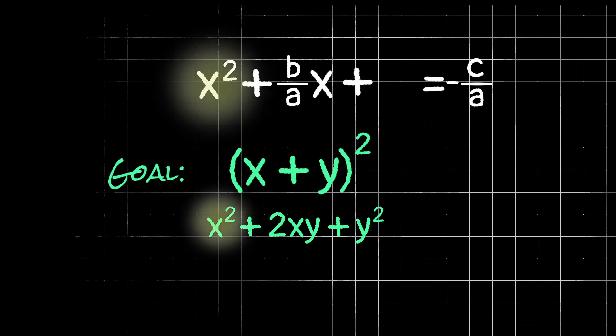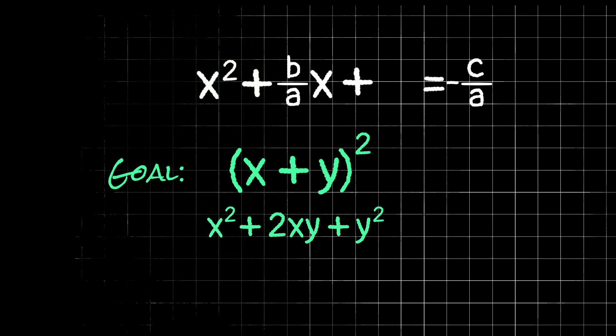Looking at what we have on the left side of the equation, we already have an x squared, so that's good. Both of these second terms have an x in it. In our equation, we have b over a x. But in this other equation, we could think of this as 2yx. So in other words, if we replaced this 2y with b over a, our second terms would look the same. So let's set 2y equal to b over a and solve for y. We divide both sides by 2, and we find that y equals b over 2a.